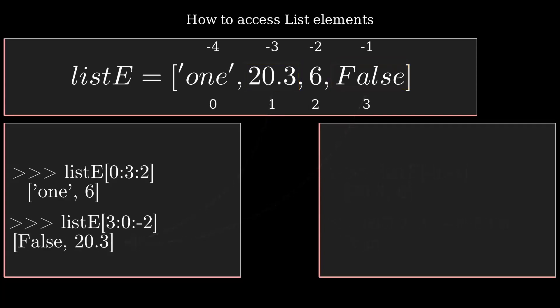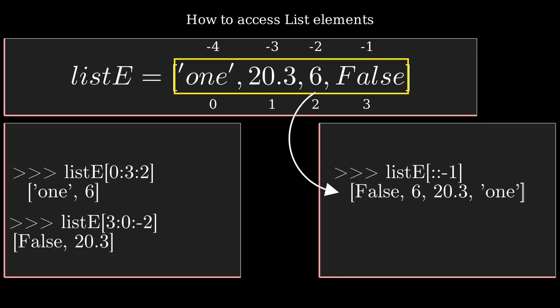If you want to reverse the whole list, you can use [::−1] in the square brackets, and then it will fetch the elements from three to zero.